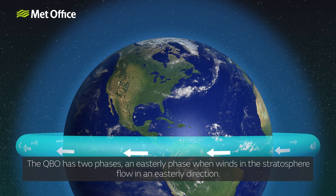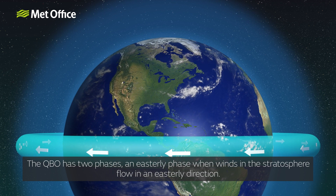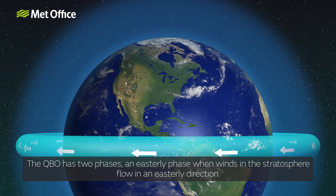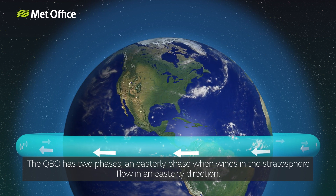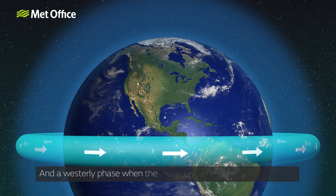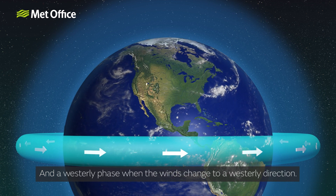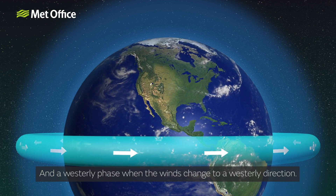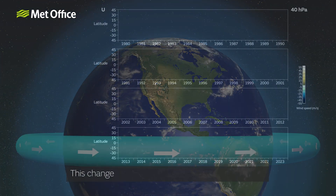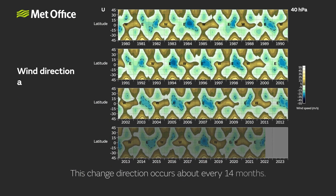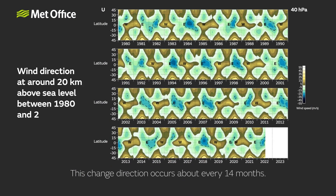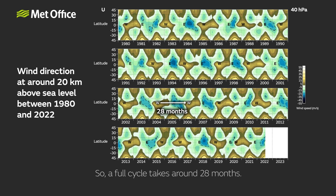An easterly phase, when winds in the stratosphere flow in an easterly direction, and a westerly phase, when the winds change to a westerly direction. This change in direction occurs about every 14 months, so a full cycle takes around 28 months.